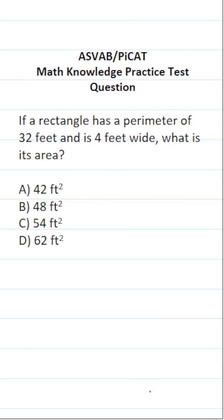This math knowledge practice test question for the ASVAB and PICAT says: if a rectangle has a perimeter of 32 feet and is 4 feet wide, what is its area?